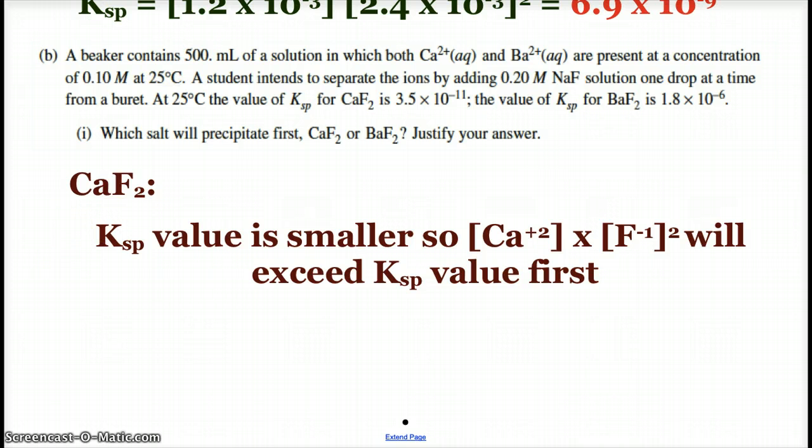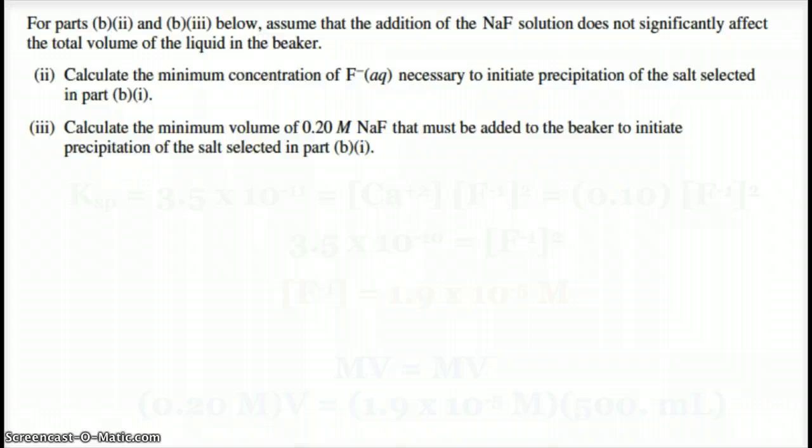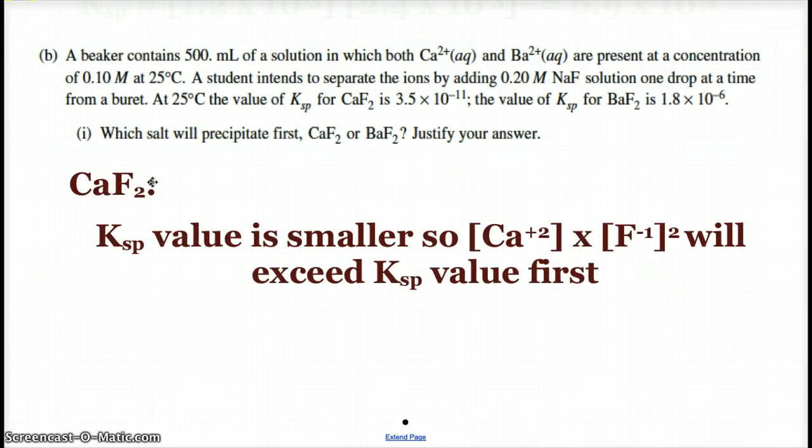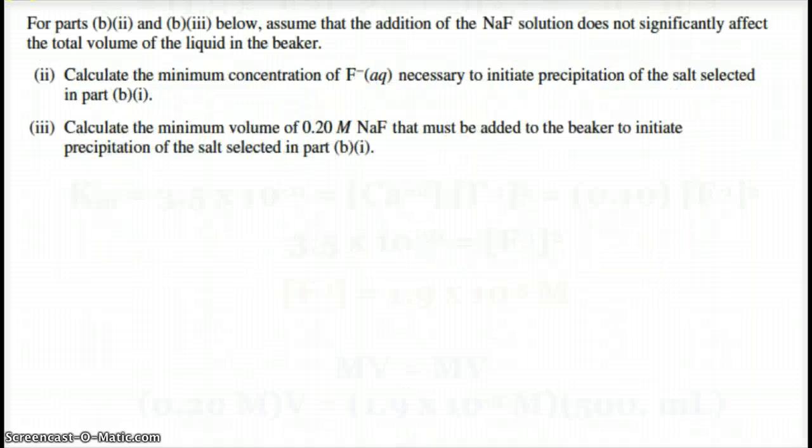Now part two here. All right. For parts B here, assume that the sodium fluoride solution does not significantly affect the total volume of the liquid. So we were told that we have 500 milliliters. So the little bit of sodium fluoride that we're going to add won't mess with that. Now part two here says, calculate the minimum concentration of fluoride necessary to initiate precipitation of the salt selected in part B. Now even if you chose the wrong salt down here, if you chose barium fluoride, and did these next calculations based on barium fluoride correctly, you would still get the points.